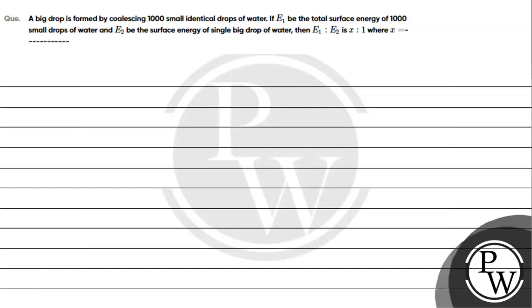Hello, let's read the given question. A big drop is formed by coalescing 1000 small identical drops of water. If E1 is the total surface energy of 1000 small drops of water and E2 is the surface energy of a single big drop of water, then E1 to E2 is x to 1, where the value of x is to be found.